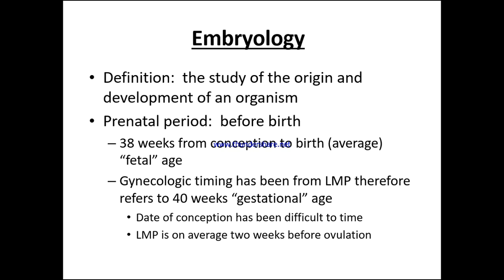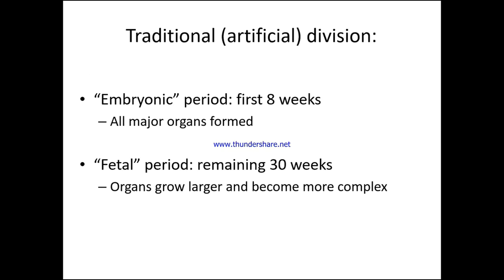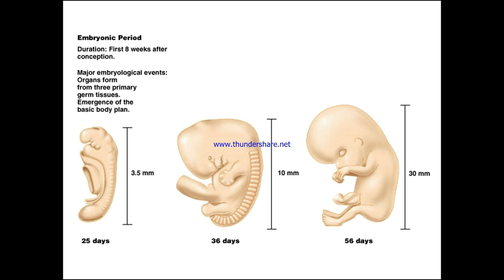So the date of conception can at times be difficult to ascertain. Traditional artificial division: we have the embryonic period, which is the first eight weeks — this is where all the important major organs are formed. Anything not happening right or misfolding at this point will cause organs to not be formed at all or formed in the wrong places. Then we have the fetal period, which is the remaining 30 weeks, where the organs start to grow larger and become more complex, and we can also see some abnormalities during this period.